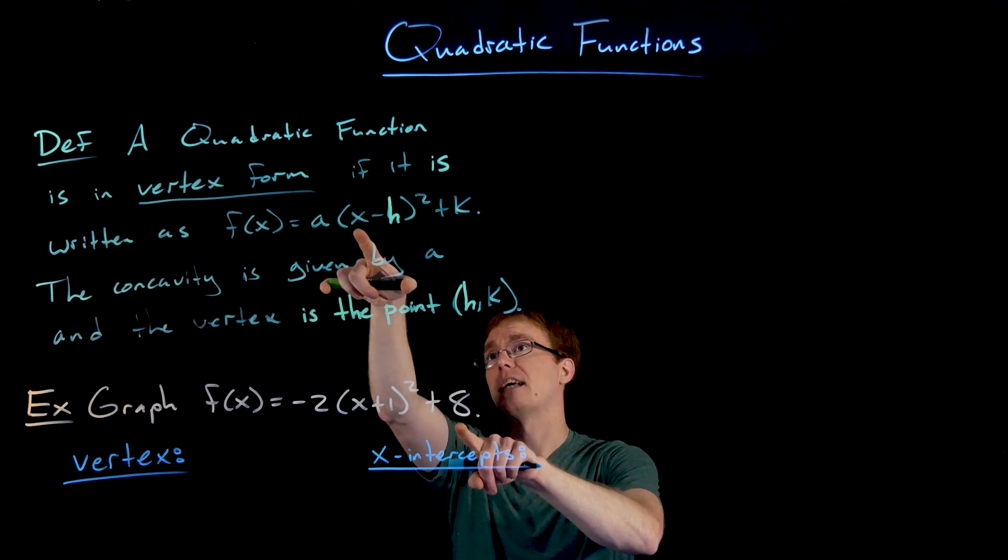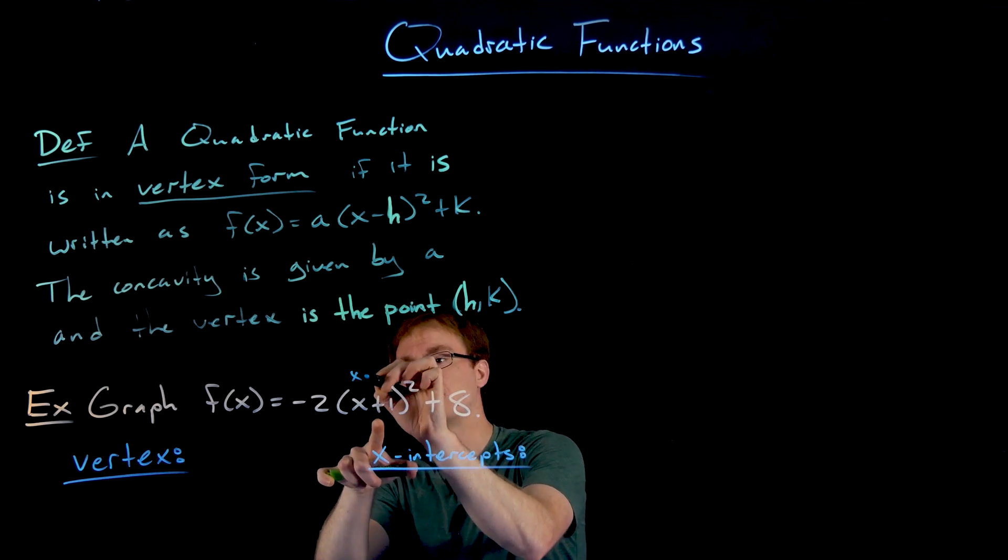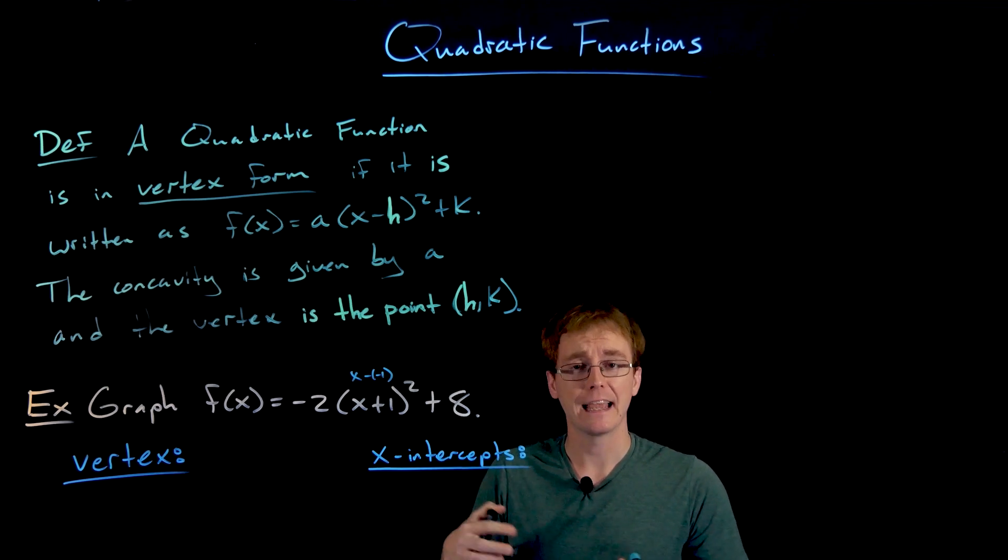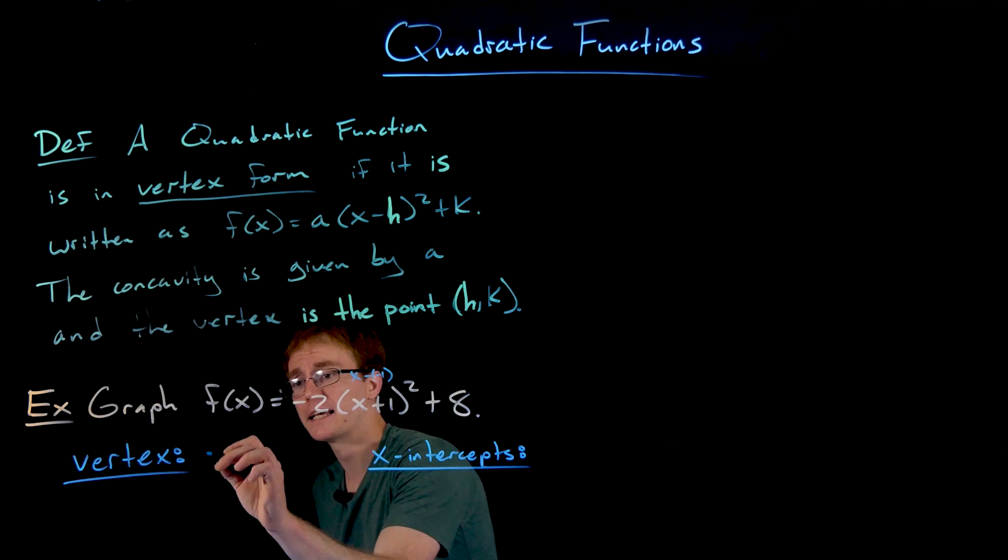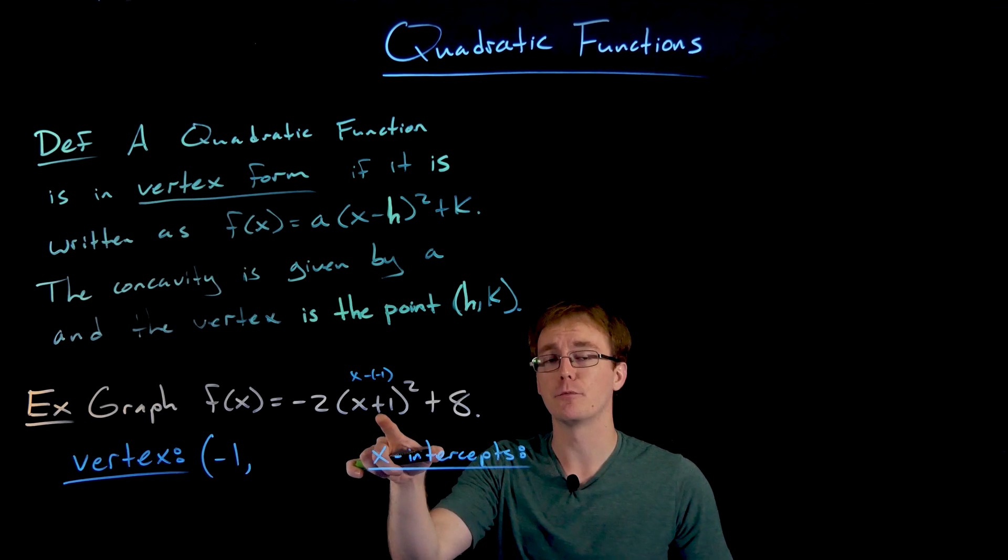Remember we have to think of this as x minus h all squared. So I have to think of that as like x minus negative one all squared. We always have to subtract that h value to find our vertex. So the x value of our vertex is going to be negative one.